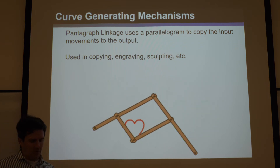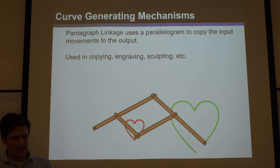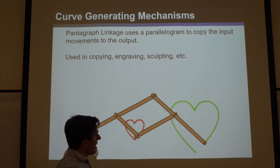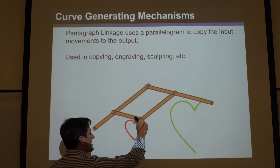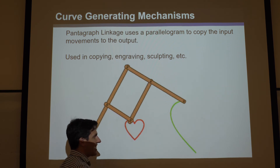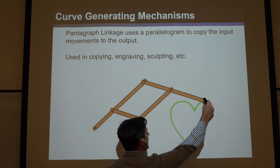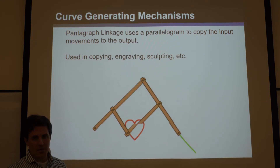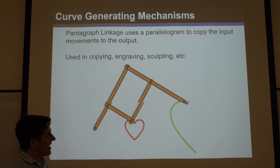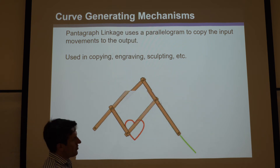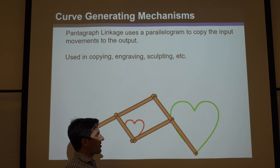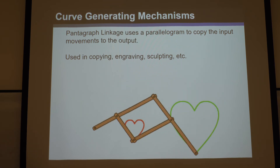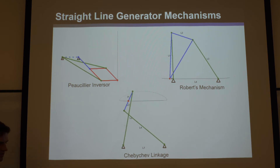This is a pantograph linkage, used long ago before copy machines. If you traced a small drawing, it would magnify the exact same design, or you could draw large and get a smaller version. Configured at the same scale, writing a letter would simultaneously produce an identical copy. It can also de-amplify hand motion to produce very fine artwork, and has been used for copying, engraving, and sculpting.